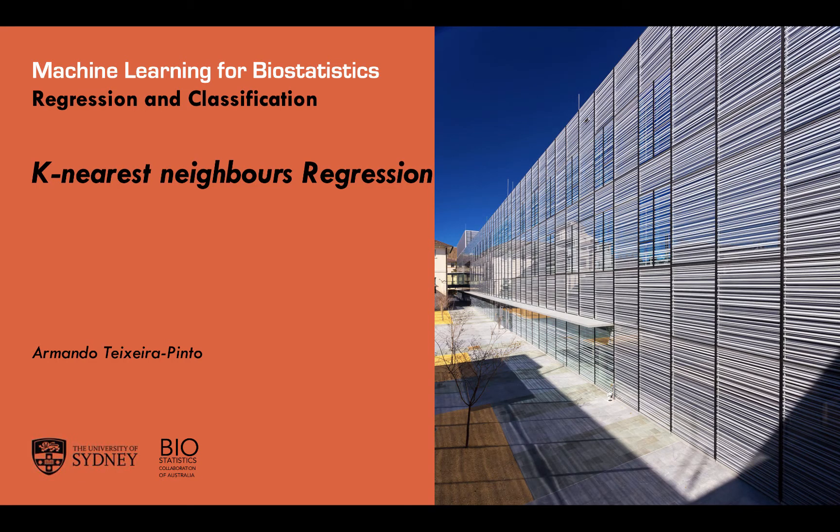I'll be talking now about k-nearest neighbor regression. This corresponds to chapter 3.5 of the Introduction to Statistical Learning book.